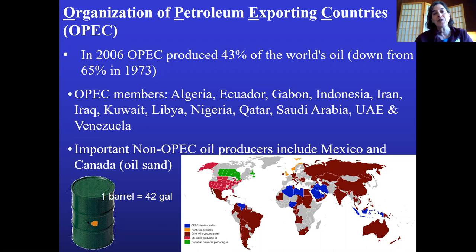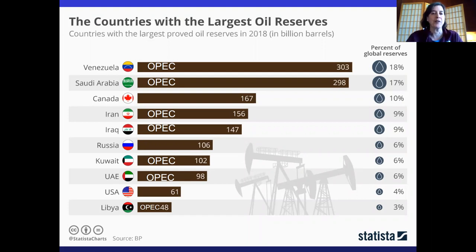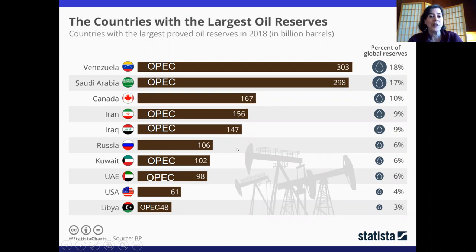Important non-OPEC oil producers include Mexico, Canada, and the United States. Looking at a map of the largest oil reserves in the world with OPEC countries superimposed: Canada is not an OPEC nation and yet has a huge amount of reserves — estimated at about 10%. The United States is pretty far down the list. Russia is also not an OPEC member, but many other countries controlling a majority of the world's oil reserves are all OPEC members.